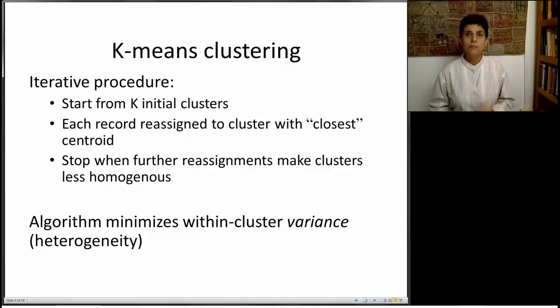How does it work? We have an iterative procedure. We start from k initial clusters, and we set k. Once every record is in one of these initial clusters, we start shifting them around. We start reassigning each record to the cluster that has the closest centroid. If you remember, we talked about centroids earlier. A centroid is simply the center of a cluster. When do we stop? We keep shifting records from one cluster to the other, until each one of these records is happy where it is, and doesn't want to move into any other cluster, because that's the closest centroid to it. What the algorithm does is it's minimizing the within-cluster heterogeneity, or variance.